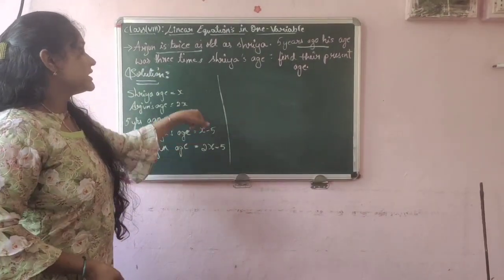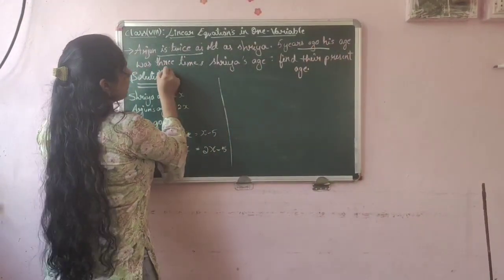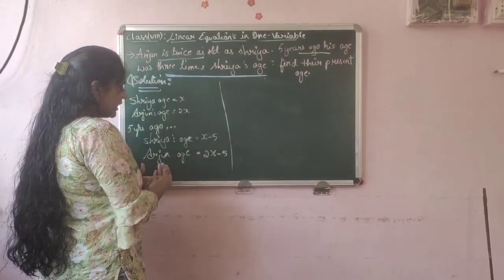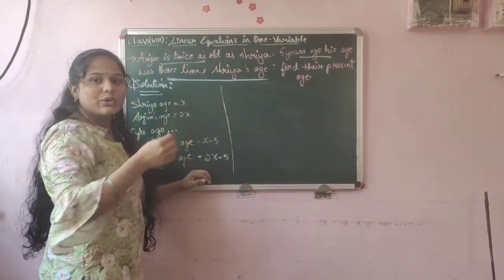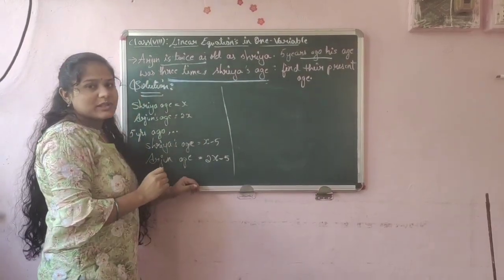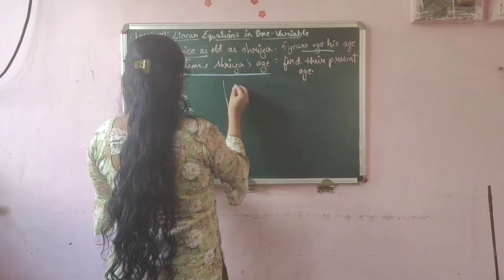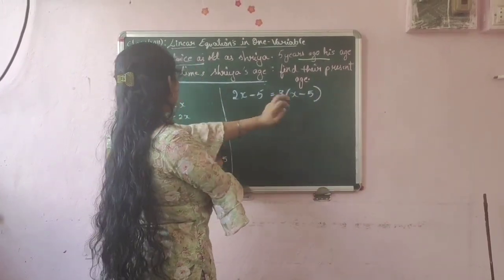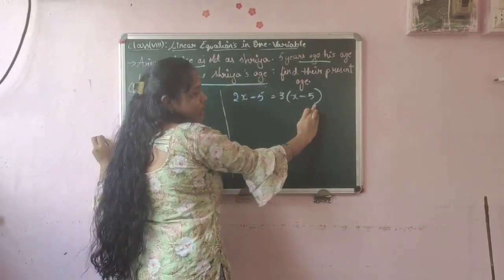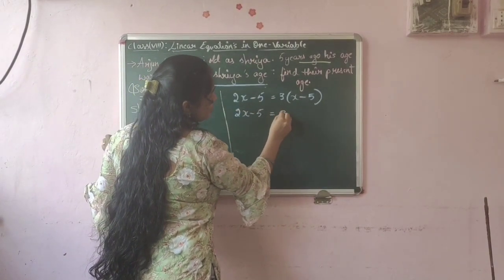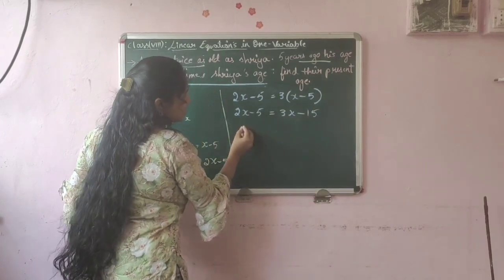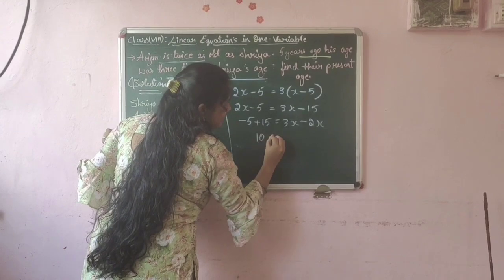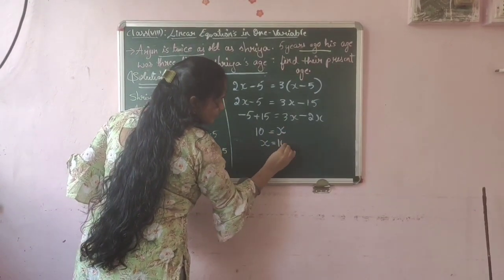Now let us equate both the ages. Five years ago, Arjun's age was 3 times Shriya's age. Shriya's age was x minus 5 and Arjun's age was 2x minus 5. Three times Shriya's age means we multiply x minus 5 by 3. So 2x minus 5 equals 3 times (x minus 5), which gives 2x minus 5 equals 3x minus 15. Transposing: minus 5 plus 15 equals 3x minus 2x, so 10 equals x.